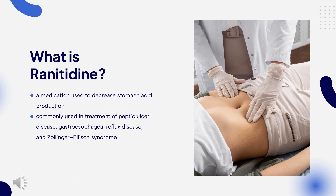Ranitidine, sold under the brand name Zantac among others, is a medication used to decrease stomach acid production. It is commonly used in treatment of peptic ulcer disease, gastroesophageal reflux disease, and Zollinger-Ellison syndrome. It can be given by mouth, injection into muscle, or injection into a vein.